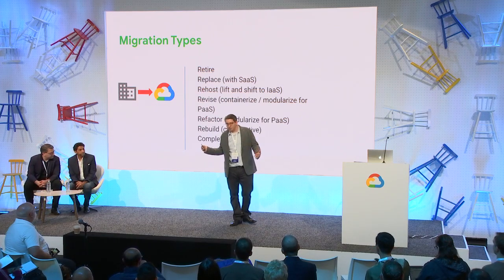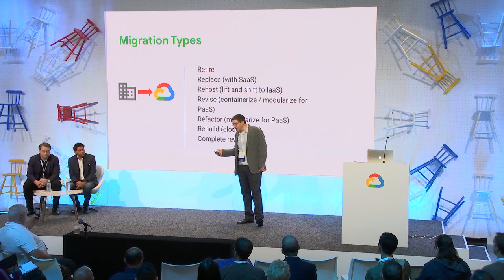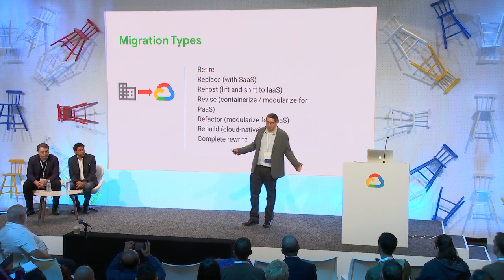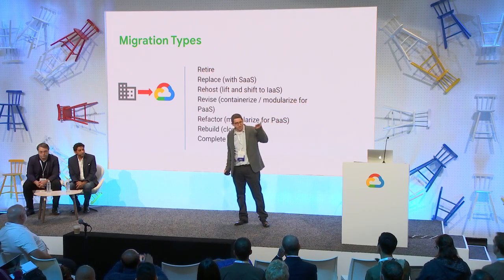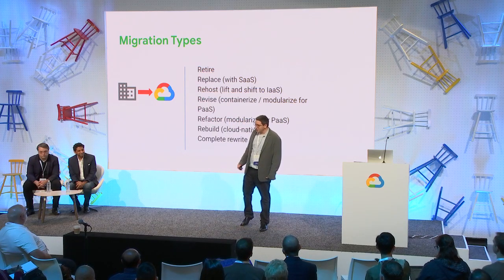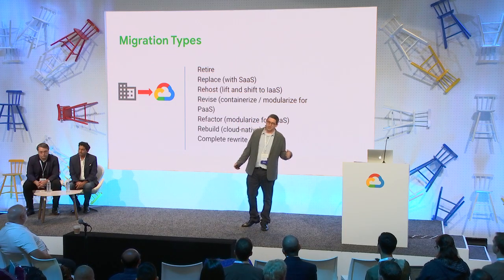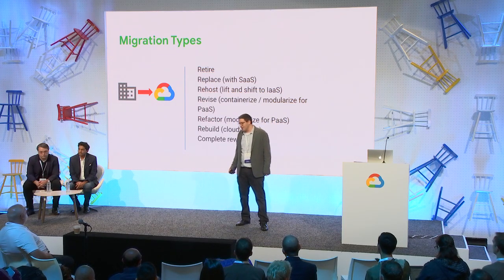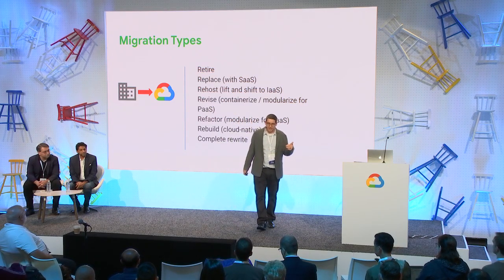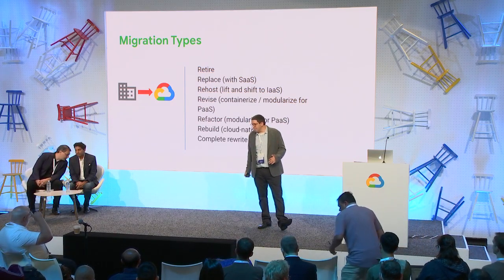We have different migration types and need to understand how exactly we are going to migrate. Probably the best way to migrate is the first one: to retire the application. If we don't need it anymore, let's just shut it down — migration is done. Unfortunately, most applications don't follow this pattern. If we can replace it with a new vendor or a SaaS vendor already in the cloud, that's also pretty easy: move to that vendor and retire.